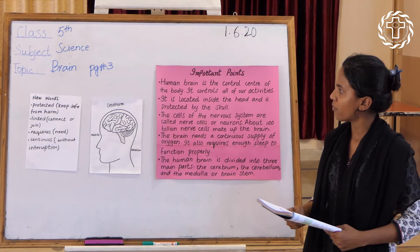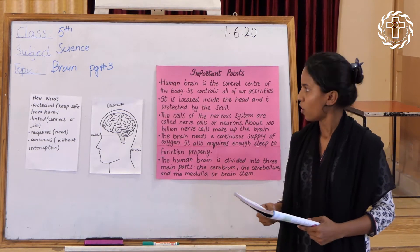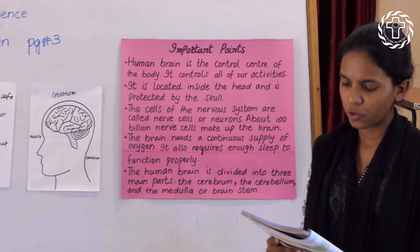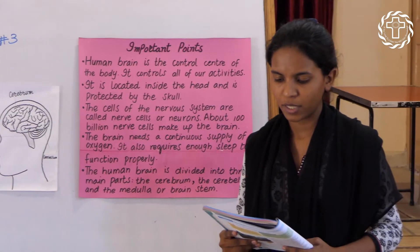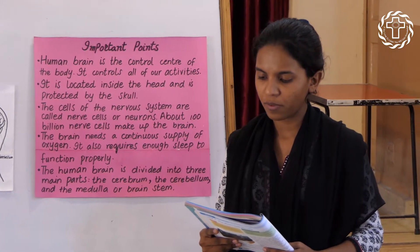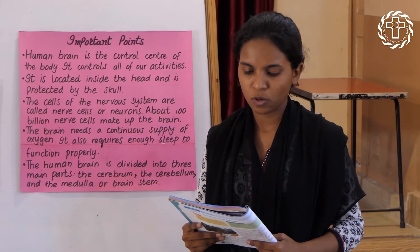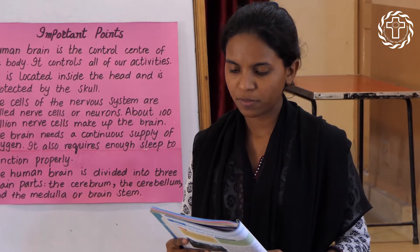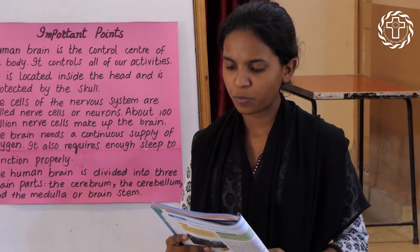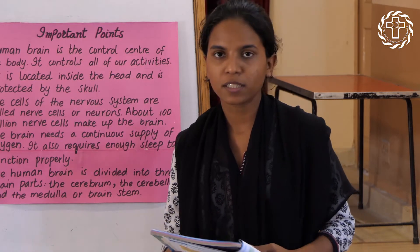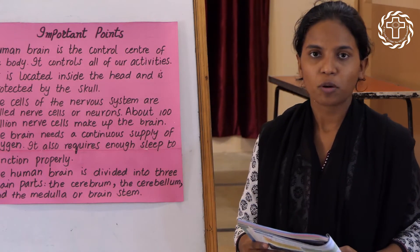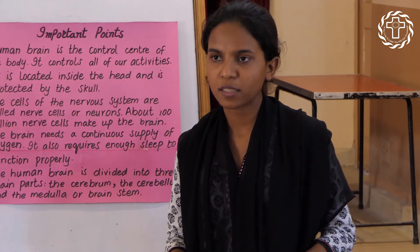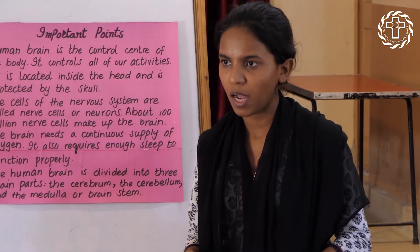We will read the first three paragraphs of page number three. The human brain is the control center of the body. It controls all of our activities. It is located inside the head at the top of the spinal cord, and it is protected by the skull. 'Protected' means keep safe from harm or injury.